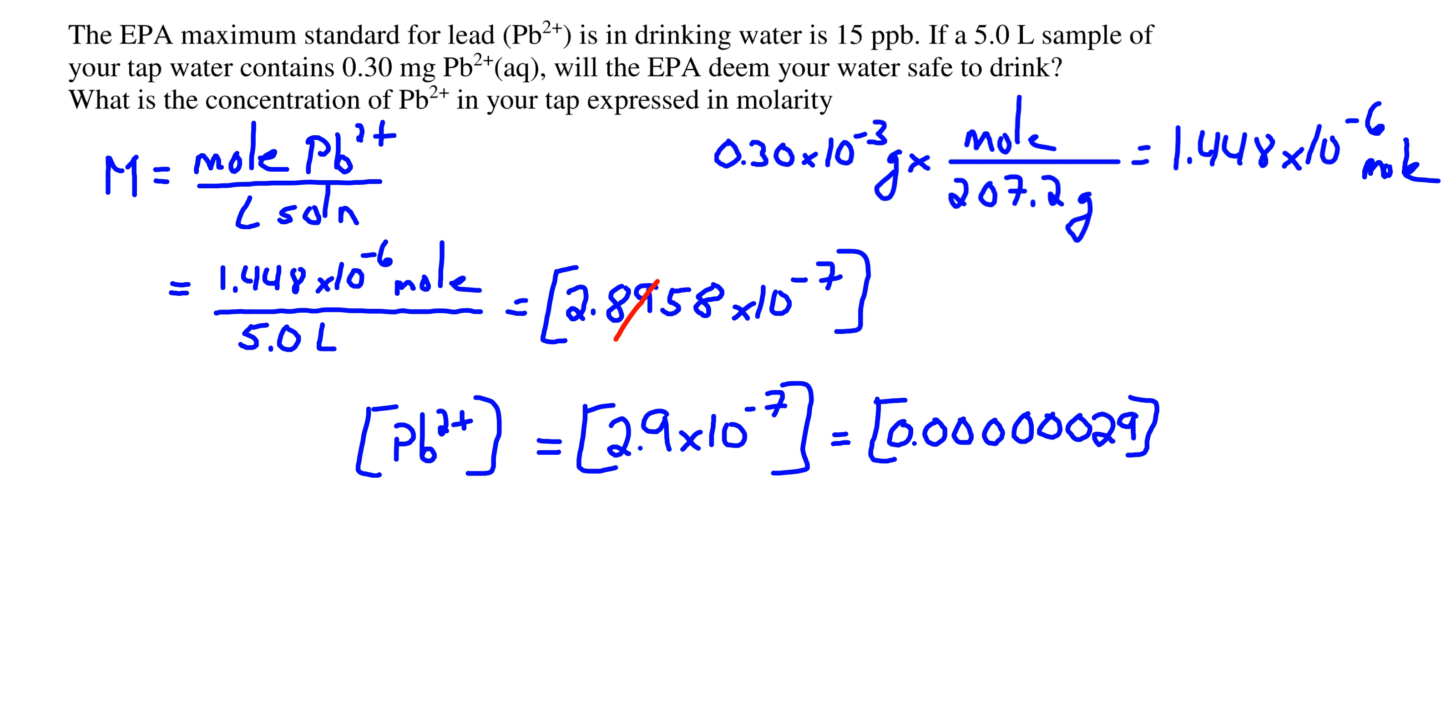Here we have our answer to the correct sig figs. Look at this number. This is a very low concentration, which illustrates why it's often convenient for these very dilute solutions to use PPM and PPB instead of molarity.